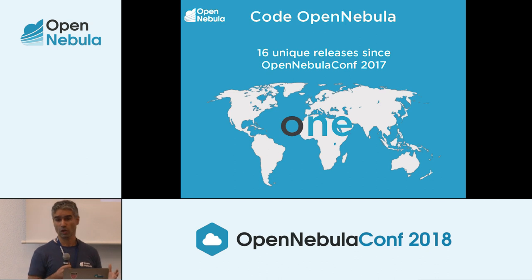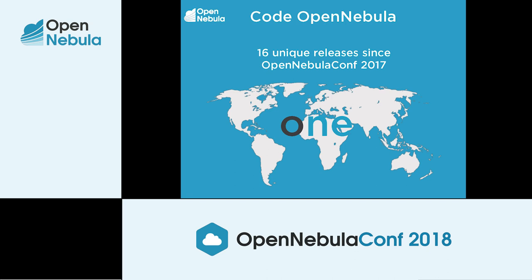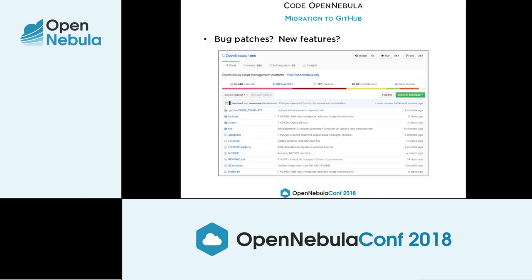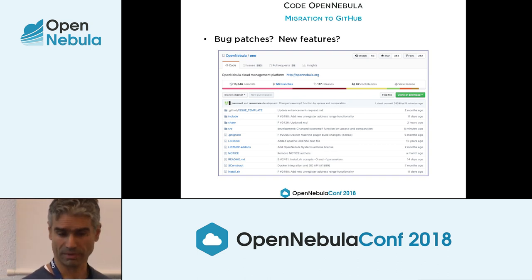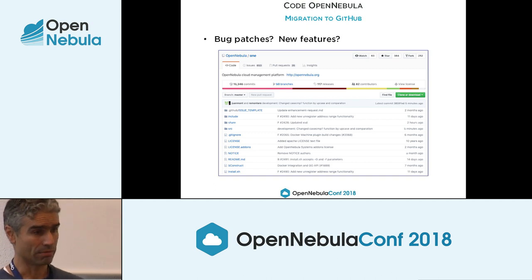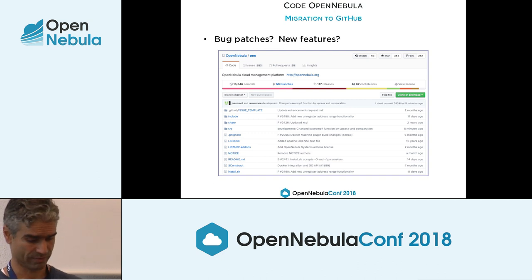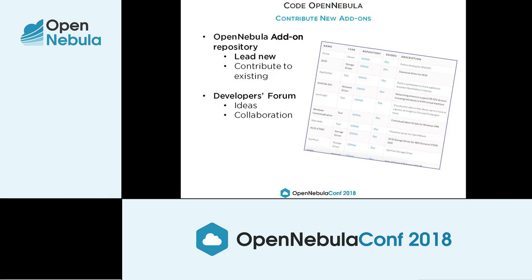Secondly, our code. Within the past year since our last conference, we had 16 different releases of OpenNebula, and a good portion of that comes through contributions from you. This past year we started using GitHub as our version control repository — one of the mainstream tools, easy to use and manage. If you have bug fixes or new features for OpenNebula, contribute them to our GitHub project. We also have our add-on repository — I urge you to create a new add-on or contribute to an existing one.